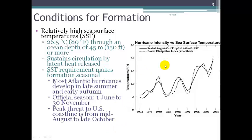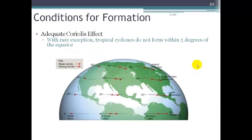In this graph, we see a relationship between hurricane intensity and sea surface temperatures. The solid line represents sea surface temperatures, and the dotted line is the power dissipation index, a measure of hurricane intensity. The times when we have warmer sea surface temperatures are the same times that we have more intense hurricanes.